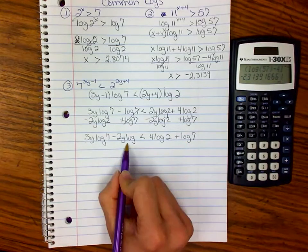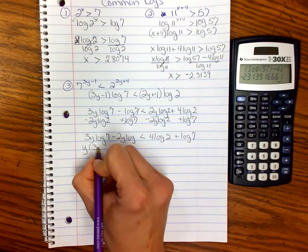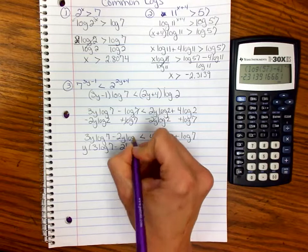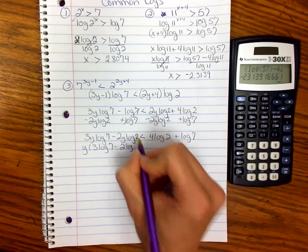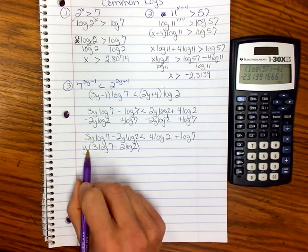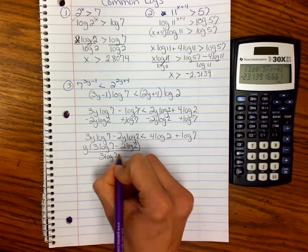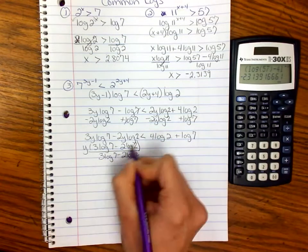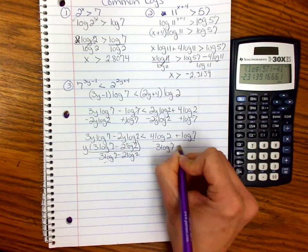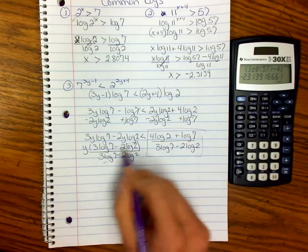Now, on this side, to get y alone, I have to factor out a y. So factoring the greatest common factor out, I get y(3·log(7) - 2·log(2)). And so then, in order to get y alone, I would divide by whatever is being multiplied by that. So although that looks kind of messy, we need to do it. Because then it cancels here, and then I divide it over here. So this becomes what y is less than.